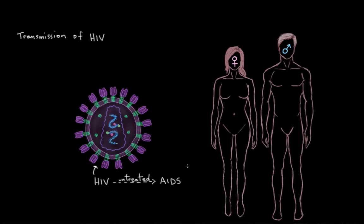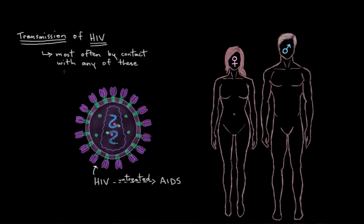I want to talk a little bit about some of the ways that HIV is transmitted — some of the different ways you can possibly get HIV into your bloodstream and thus develop an HIV infection. HIV is most often transmitted through contact with three different types of body fluid from an HIV-infected person.